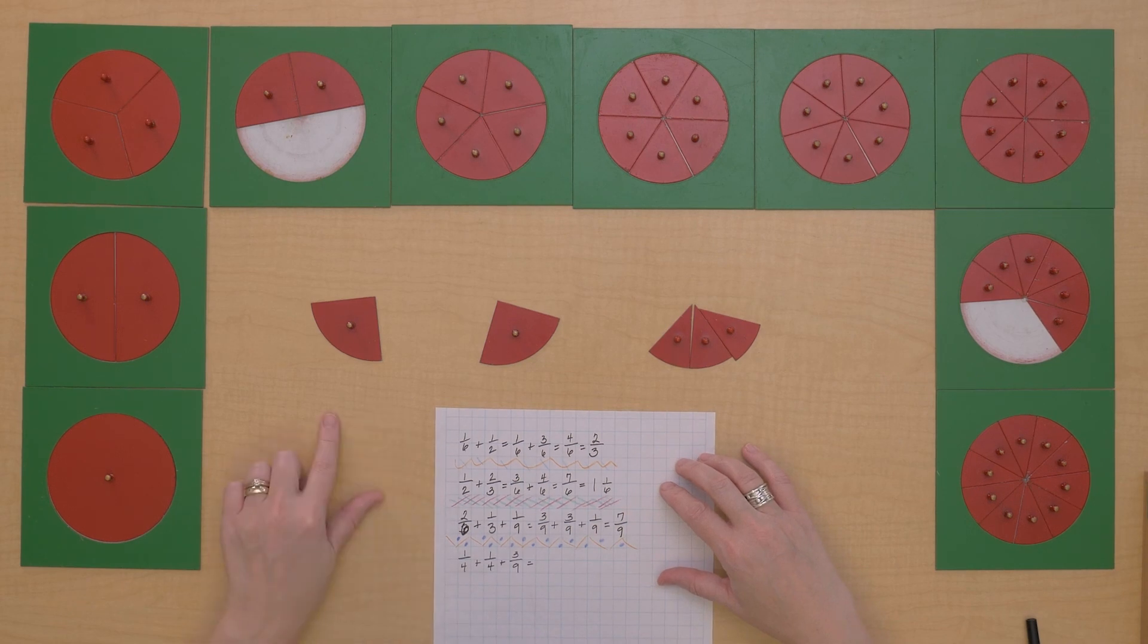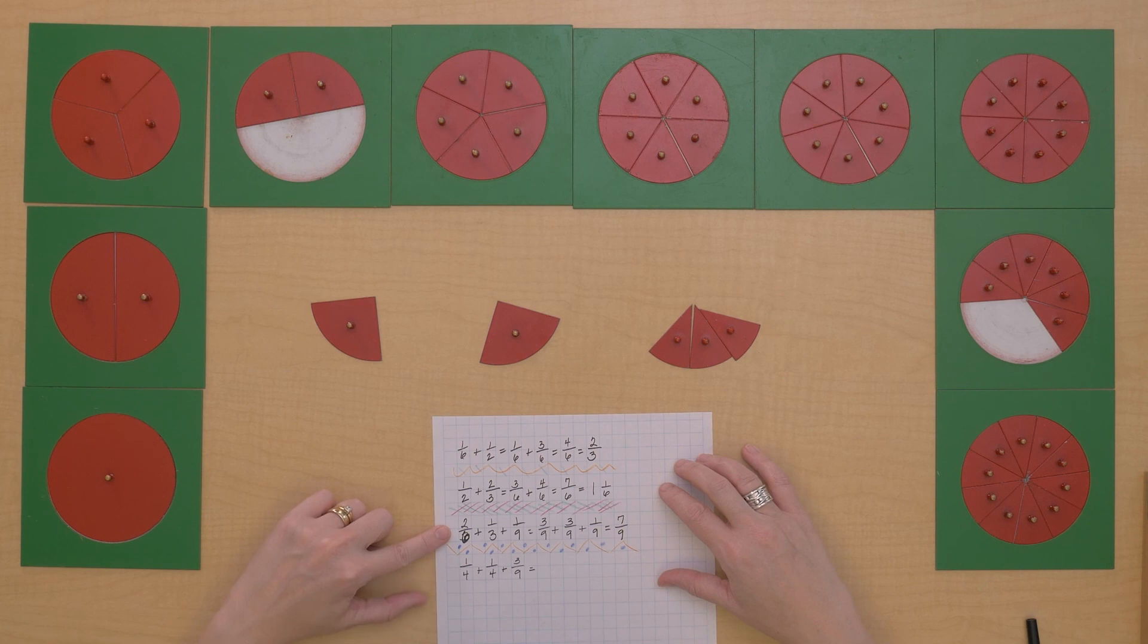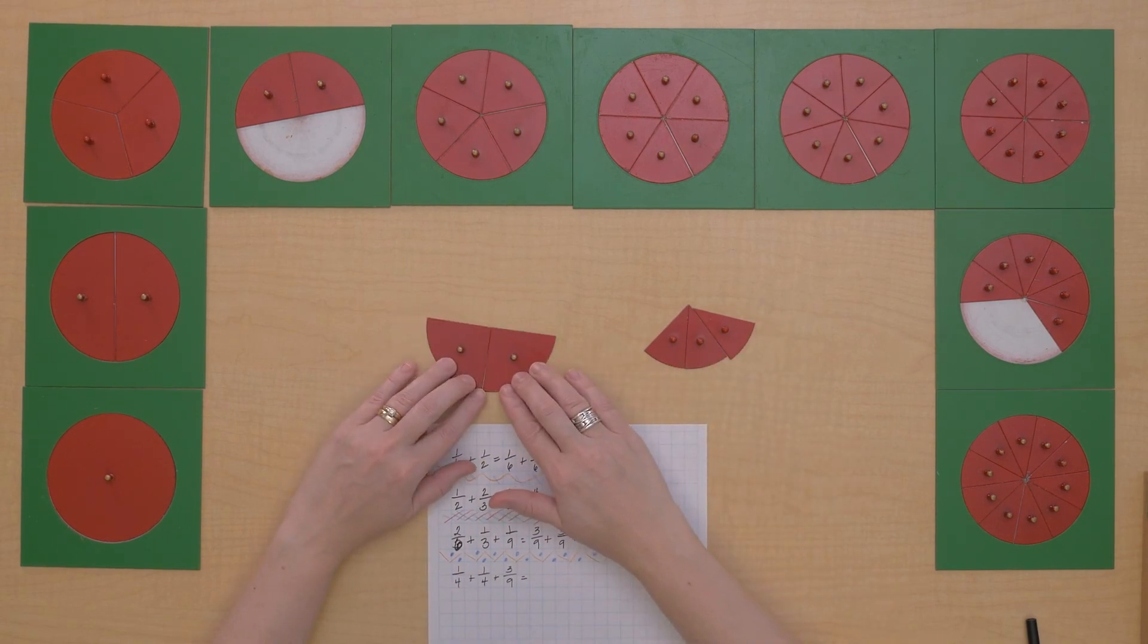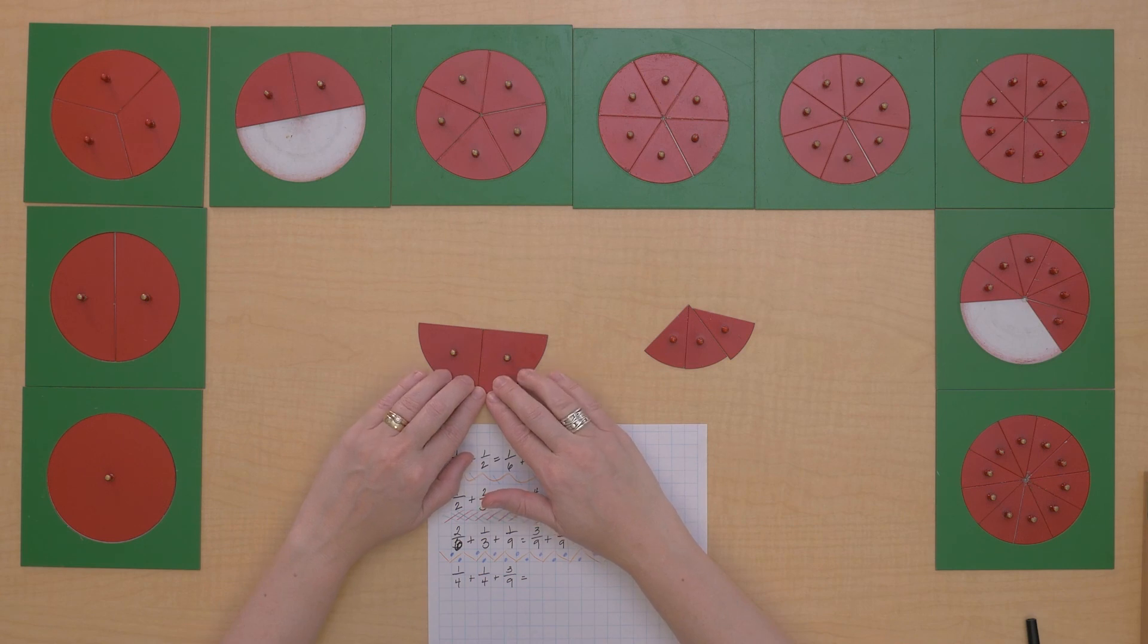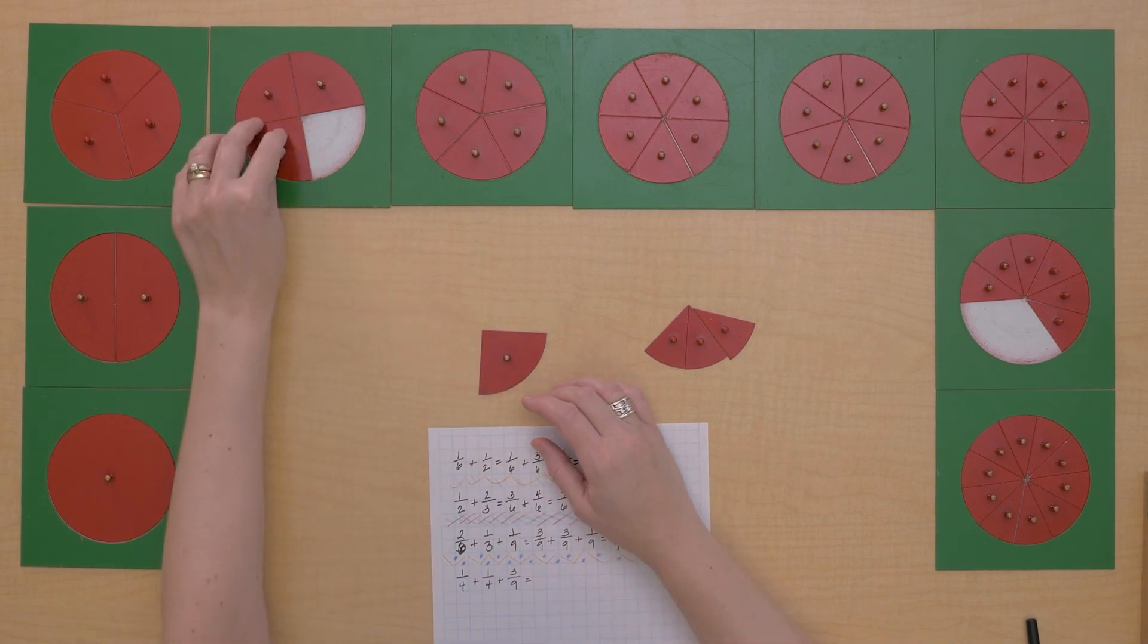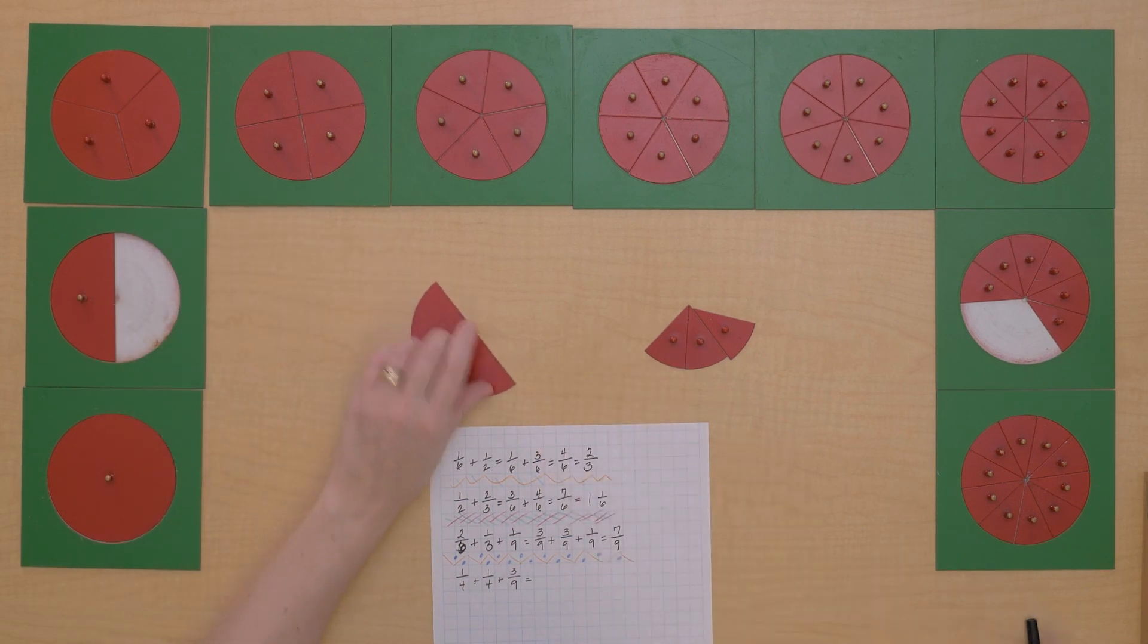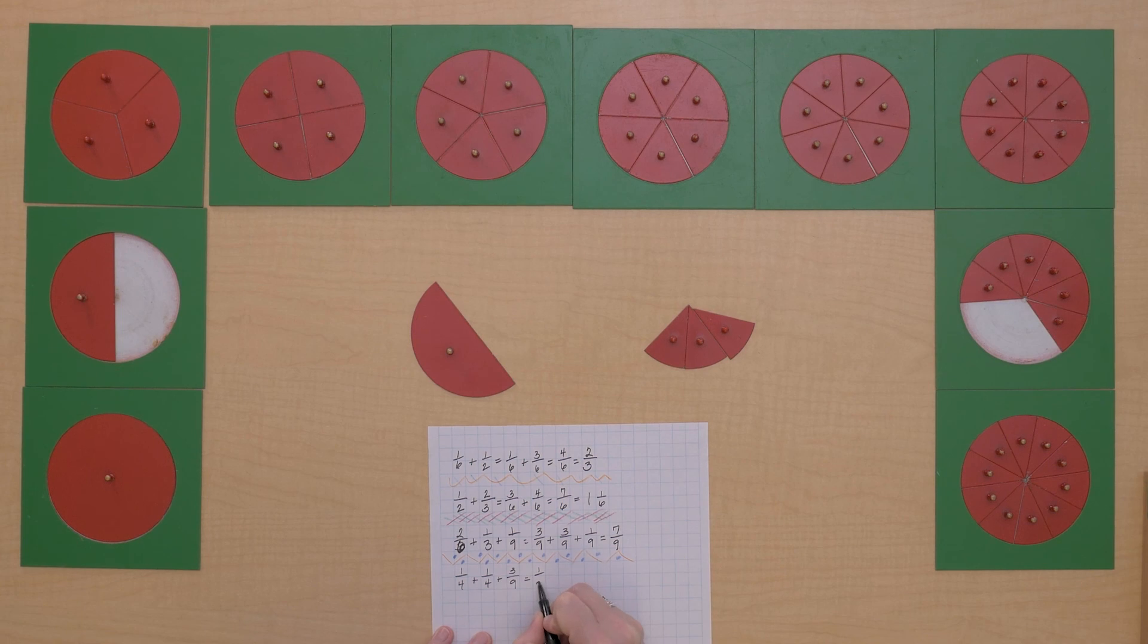We can't get fourths to ninths. We could do, let's see, this makes a half. So does that help us if we do a half? Let's just write what we've done. One-half plus three-ninths. No, doesn't help us.